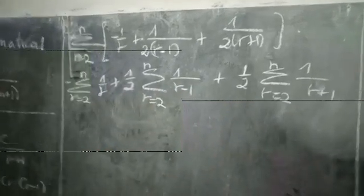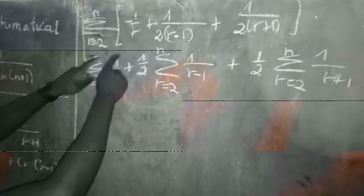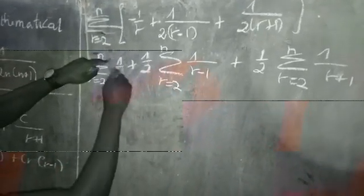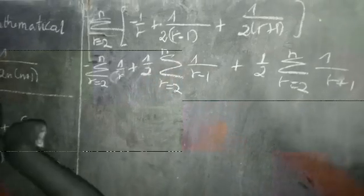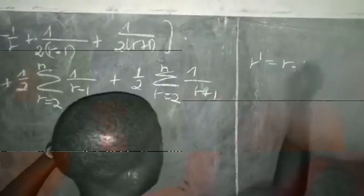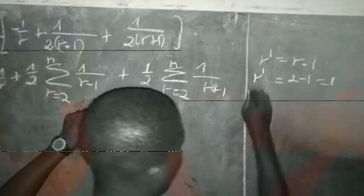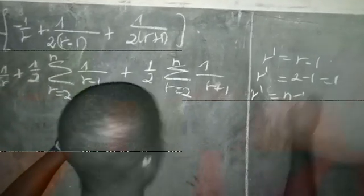So now I will try to express all the terms in terms of 1 on r in order to simplify my solving. I will express this one in terms of 1 plus r, this one in terms of 1 on r. I am posing r prime equal to r minus 1; the lower boundary will correspond to 2 minus 1, and the upper boundary will correspond to n minus 1.